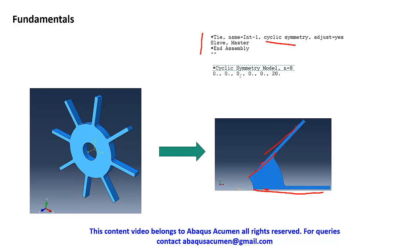You define how many sectors the cyclic symmetry model has — the nodal diameter — and then define the axis using two coordinates, like point 1 and point 2. You say symmetry about N equals N. In the interaction, you use cyclic symmetry. Phase one and phase two nodes must be tied in translation and rotation — that is cyclic symmetry.